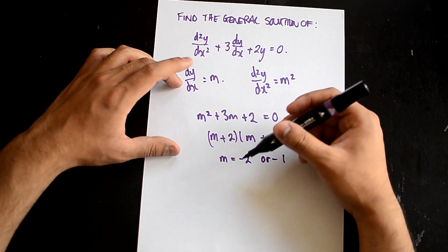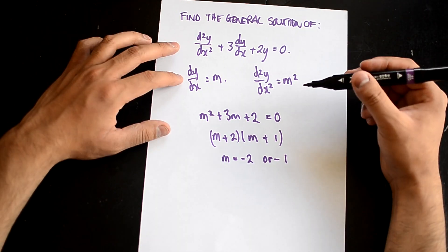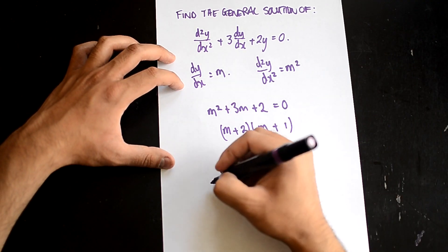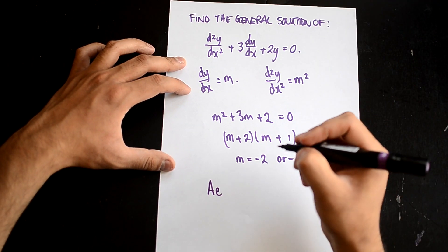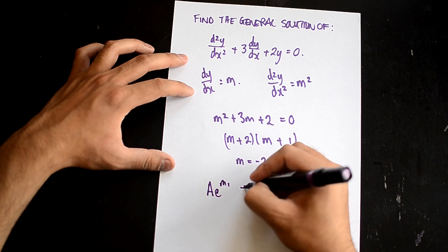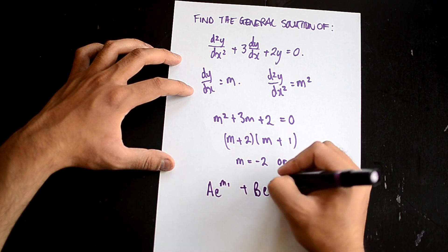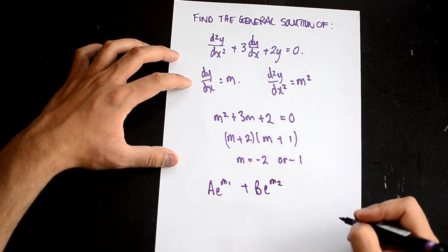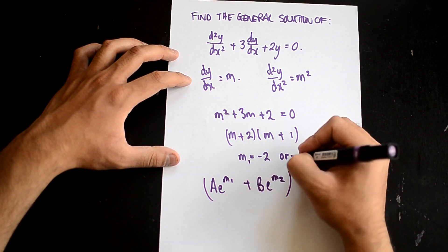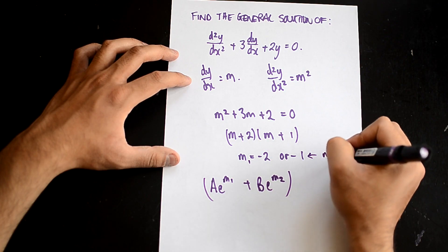Obviously, the solution could have been something like 3 or 2, but it's -2 or -1. So for that reason, we use Ae^(m₁x) plus Be^(m₂x), where this is m₁ and this is m₂.